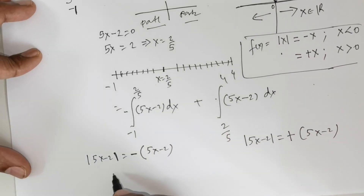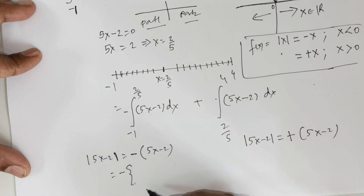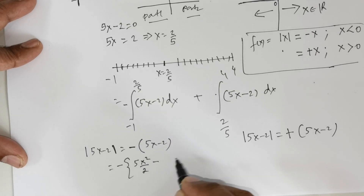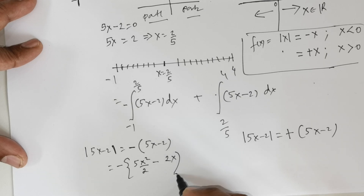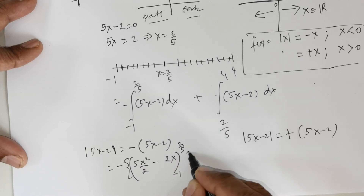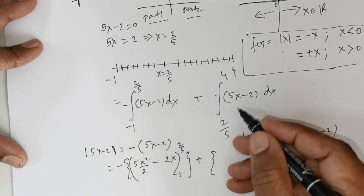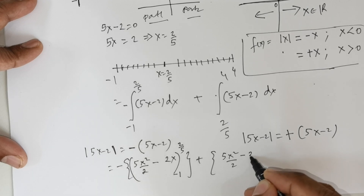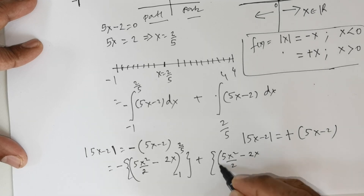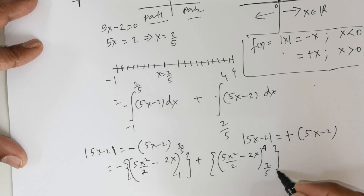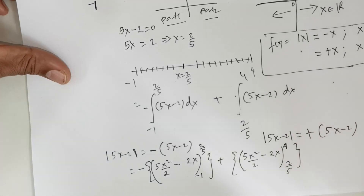Now we integrate. For the first part, taking the negative sign out, integrating 5x gives 5x²/2, and integrating negative 2 gives negative 2x. The limits run from negative 1 to 2/5. For the second part, we get the same antiderivative 5x²/2 minus 2x, with limits from 2/5 to 4.